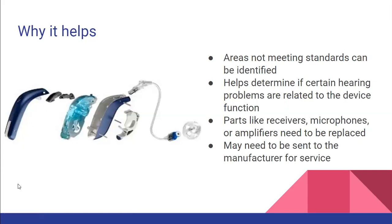So why does this help? Why would you want to have electroacoustic analysis performed? The important part is that it can identify areas that aren't meeting the standards, and that helps us determine if there's a problem with a hearing aid. Certain tests can indicate which part is more likely affected, and that's going to influence how we solve the problem. Some parts, like receivers, can be replaced in the office, but other parts, like microphones and amplifiers, need to be sent back to the manufacturer for repair. So the test is really important to help us figure out what the problem is, where it is in the hearing aid, and how to fix it.